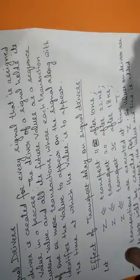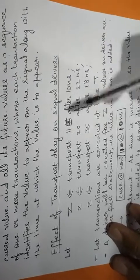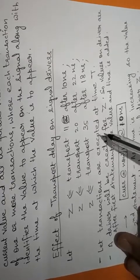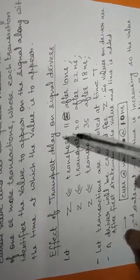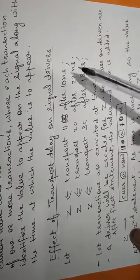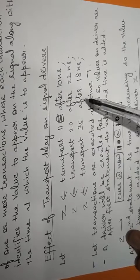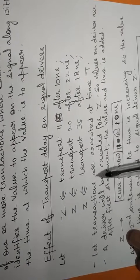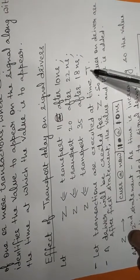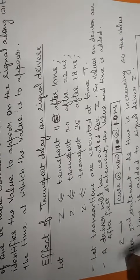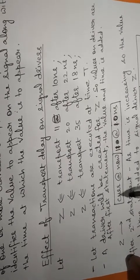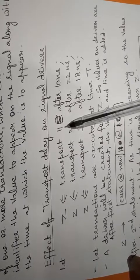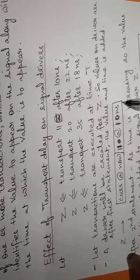Now I will be discussing the effect of transport delay on signal drivers. For this I have taken an example where the output is Z and its value is changing after certain statements. The first statement is transport 11 after 10 nanoseconds, transport 20 after 20 nanoseconds, and transport 35 after 18 nanoseconds. In this case, how will the signal driver be created? Suppose the execution time is at time T. The driver will initially consist of the current value at now, and after the first statement it will store value 11 at 10 nanoseconds.